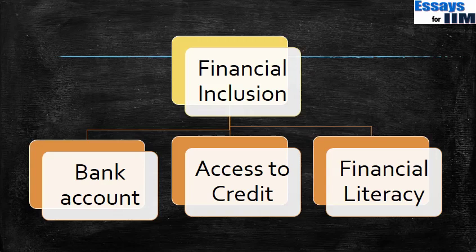For these services to be available to people, they should also know how to use those facilities — that is where financial literacy comes in. So the people should first have access to bank accounts, access to credit, and also financial literacy to be able to use these products. Only then will there be proper financial inclusion and people will be benefited by banking services in totality. This is the focus of the Jan Dhan scheme.